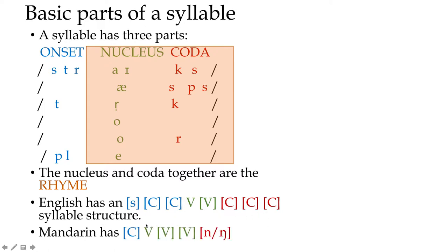Mandarin Chinese, on the other hand, has a very simple syllable structure. You could have one vowel as an onset, or a diphthong or even a triphthong — like the word 'shuai,' where 'u-ai' would all be the nucleus with three vowel targets. But there can only be a single consonant in the onset; no cluster of two is allowed. And the only possible coda consonants are 'n' or 'ng,' with no other consonants permitted in the coda position.